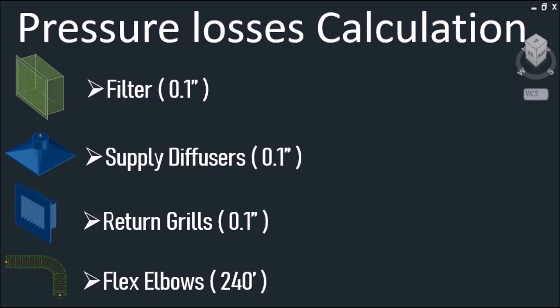It's very important to include components such as filters, diffusers, grills, flex elbows, and dampers. For this system design, the filter, supply diffuser, and return grills will each use 0.1 inch of water column. For our flex elbows, we are using 240 feet equivalent length of duct.